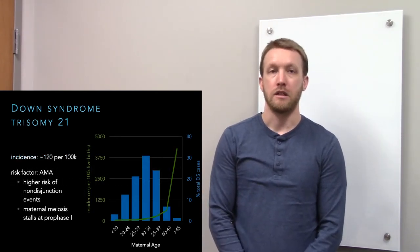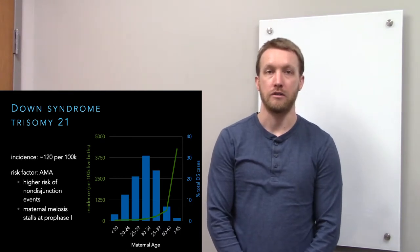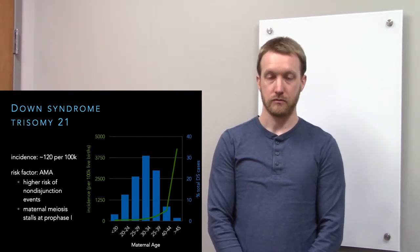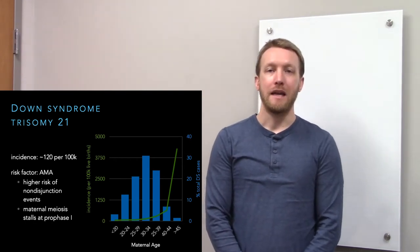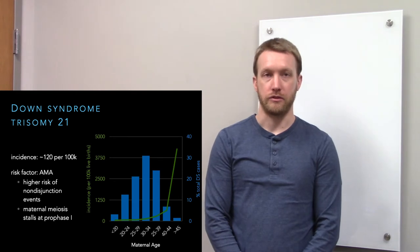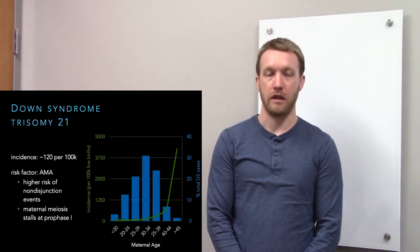The incidence is somewhere around 120 per 100,000 live births. The major risk factor for Down syndrome is advanced maternal age.